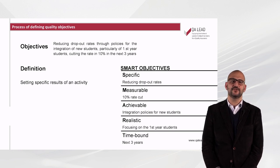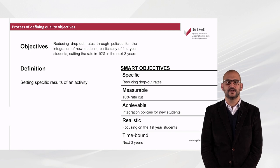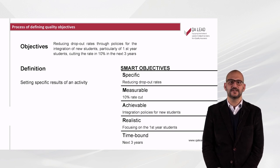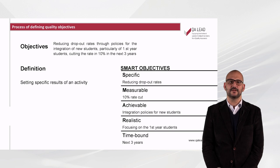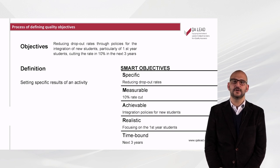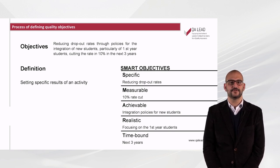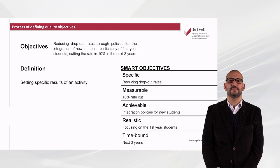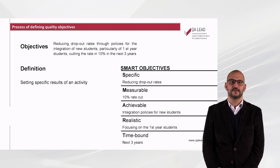A stands for Achievable, meaning that the objective must allow the perception that the goal is achievable — for instance, integration policies for new students. R stands for Realistic: the objective setting has to be based on knowledge and one must have the sense that it is possible to fulfill the goals — like focusing on first-year students. T stands for Time-bound, that is to say, we need to set a time scale for the objectives — for example, the next three years.